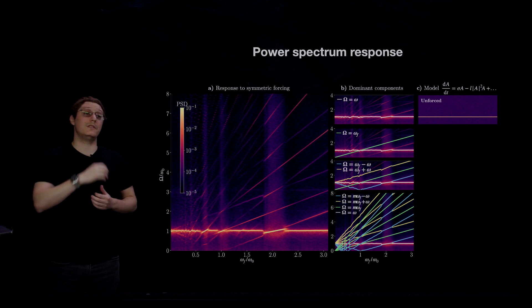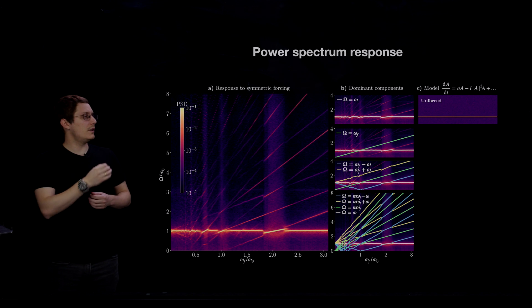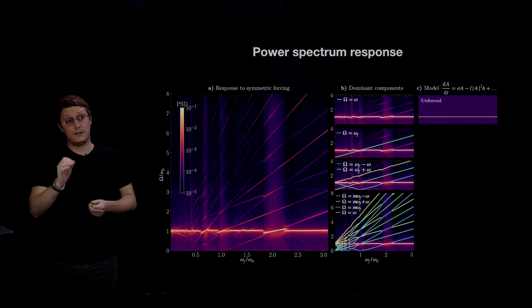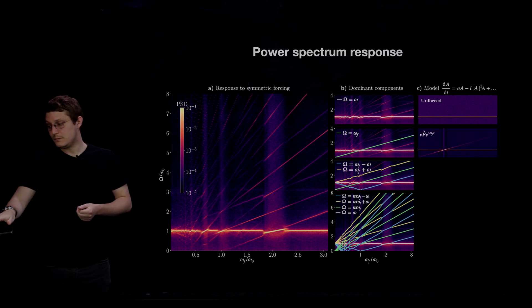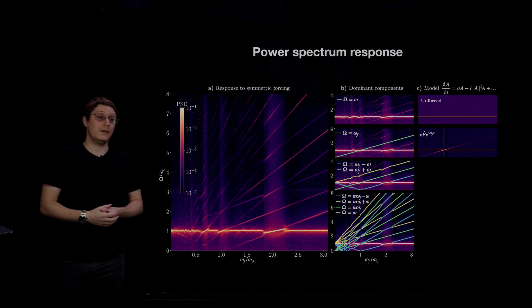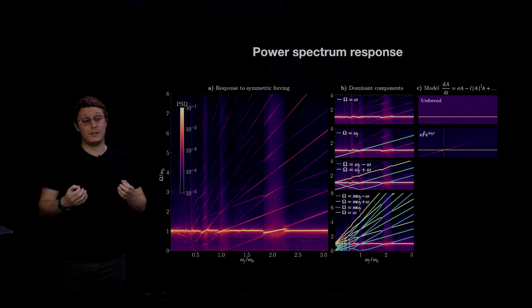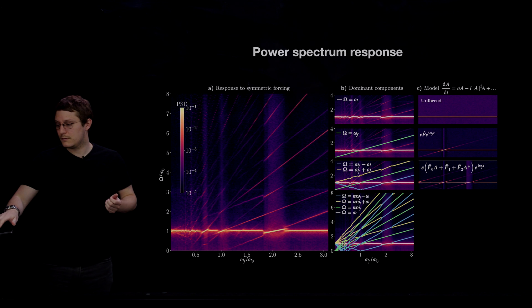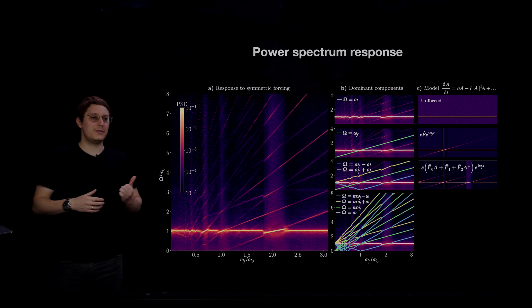And our starting point is the Stuart-Landau model, which with correct coefficients sigma and L will exhibit self-sustained oscillations at omega zero. If we add a forcing term, we will get a response at the frequency that we are forcing. But if we have a harmonic forcing and we want to get a response at different frequencies, then we need to add a non-linear term. And these terms that we add in here are modeling the triadic interactions between the forcing and the wake modes.